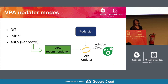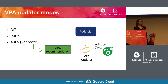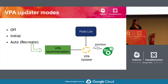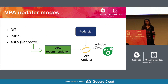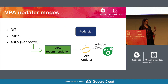VPA can be configured to work in three different modes. It can be configured in an off mode, which is sort of a dry run — it gives you recommendations but will never change the requests of your running pods. Then there is the initial mode that updates the requests of the pods but only on pod creation. And the third one goes one step further: it looks at your running pods and updates the resource requests if needed.